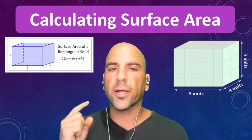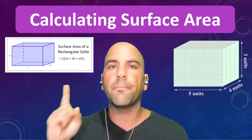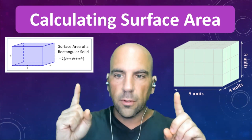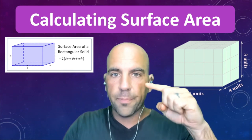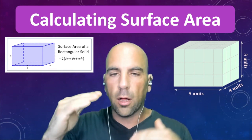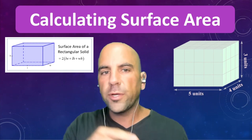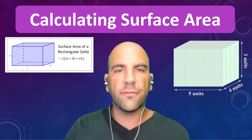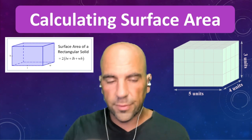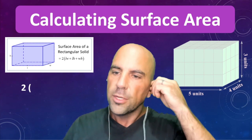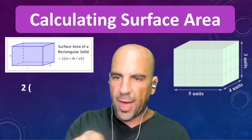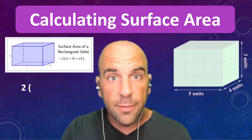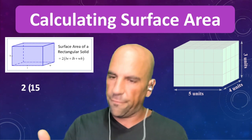Let's take on this rectangular prism. The sides, the front and back, and the top and bottom are all identical to one another, so we just need to take two times the measurement of each side added together, because there are two of each. So two times — we'll start with the front and the back. The front and back by perspective: five times three is 15.